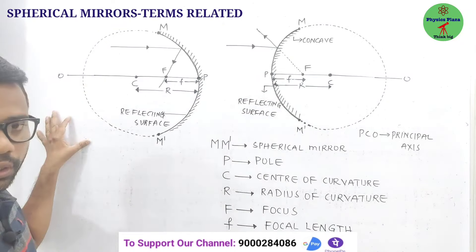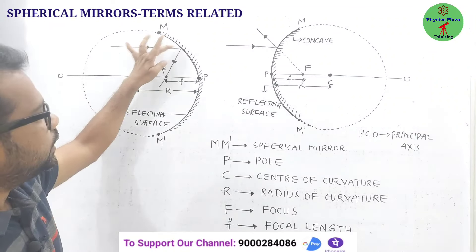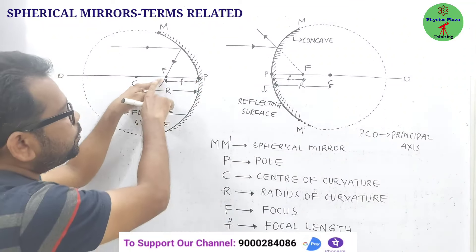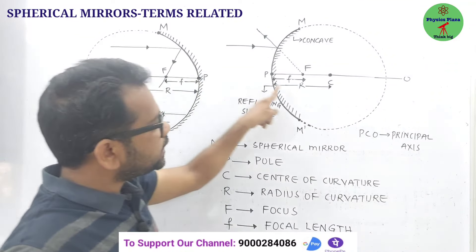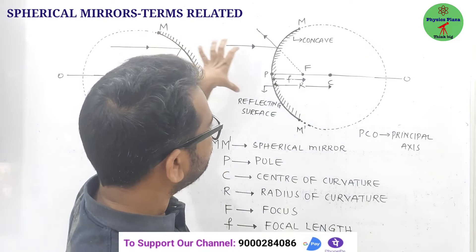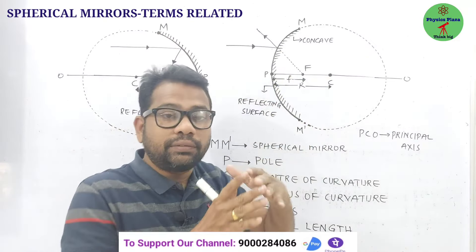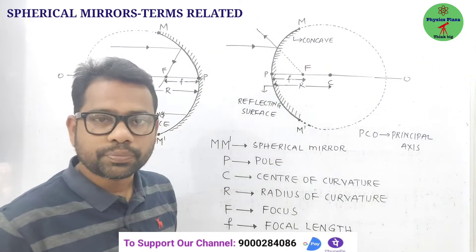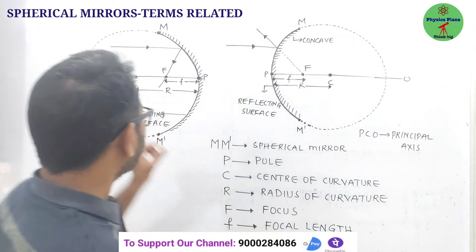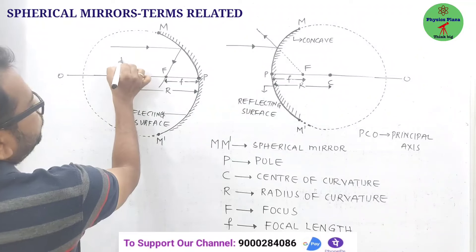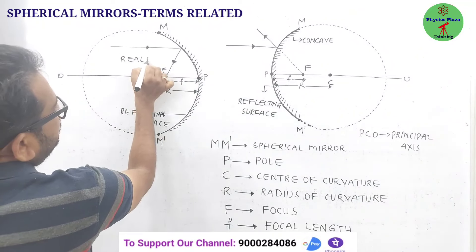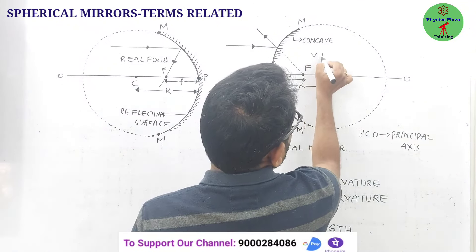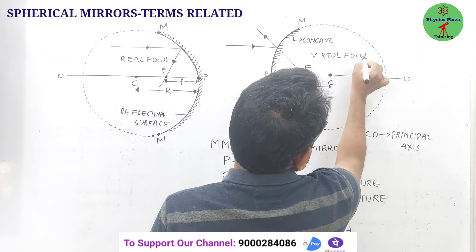An imaginary infinite line connecting the center of curvature and the pole of the spherical mirror is called the principal axis (PCO or P-C-O). For a concave mirror, if any number of light rays come parallel to the principal axis, after reflection they all pass through a common point on the principal axis — that common point is called the focus.